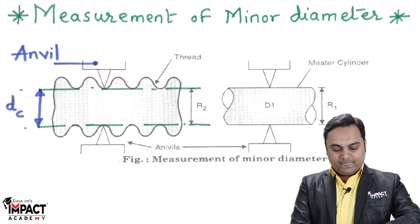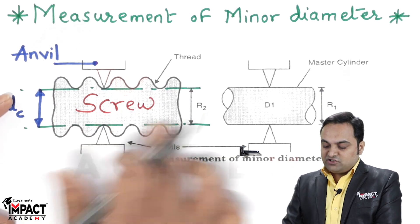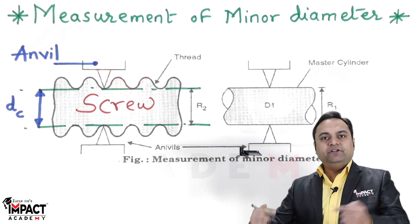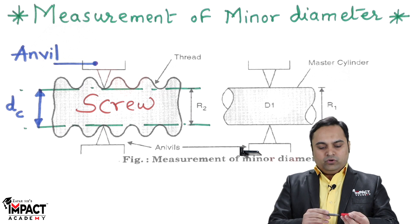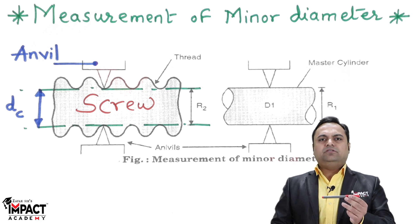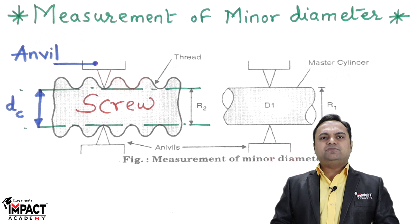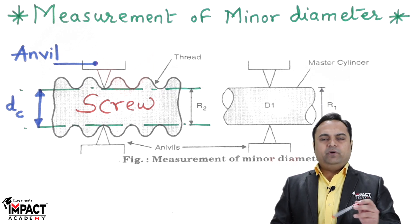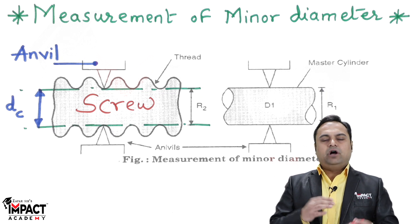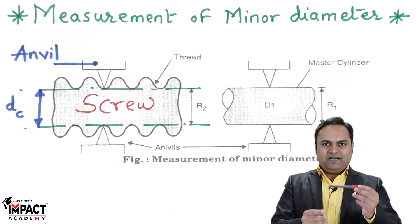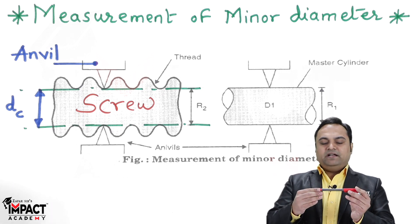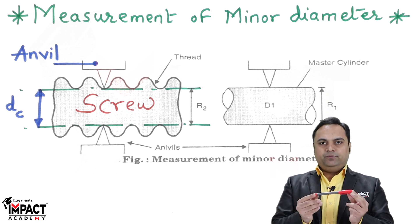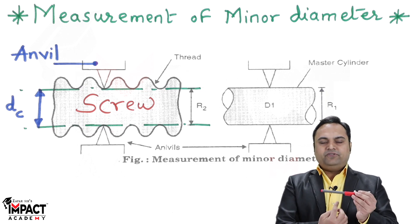The screw thread would be held between two centers of the floating carriage micrometer. For details on how the arrangement is done and how to keep the screw in the floating carriage micrometer, you can refer to my video whose link is provided in the description below. The screw thread is held between two centers on the floating carriage micrometer, and from the opposite ends there would be pointed end wheels in contact with the core diameter.